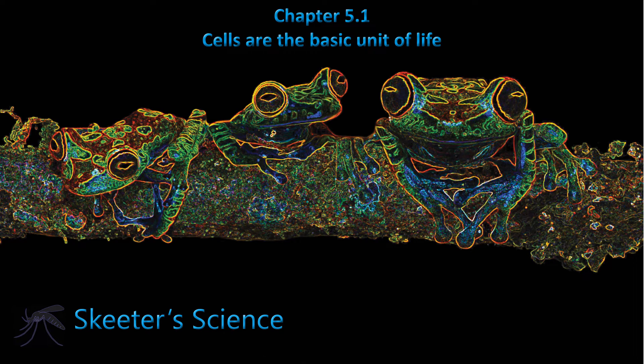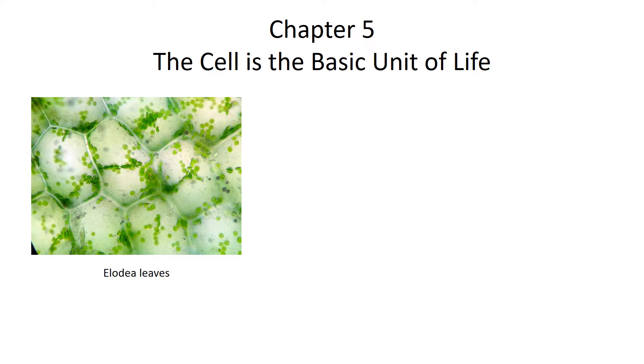Chapter 5. Cells are the basic unit of life. There are a lot of different types of cells. For example, there are plant cells, and plant cells form a multicellular organism.